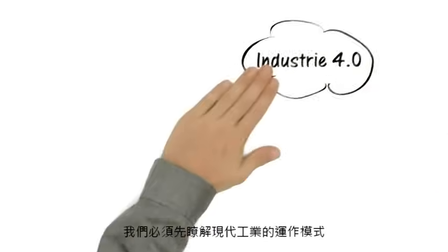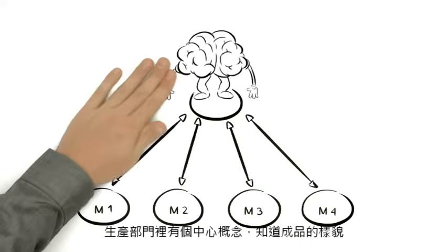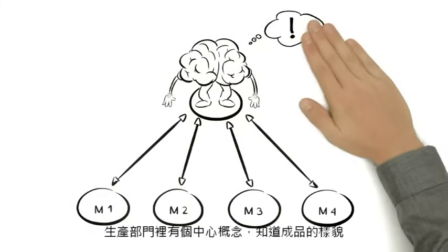In production, there is one central mind that knows what the finished product will look like.